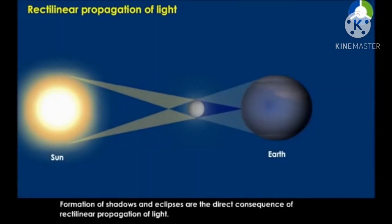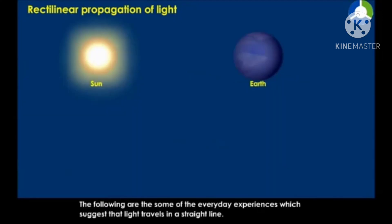Formation of shadows and eclipses are direct consequences of rectilinear propagation of light. The following are everyday experiences which suggest that light travels in a straight line.